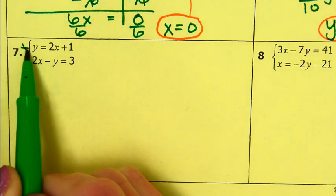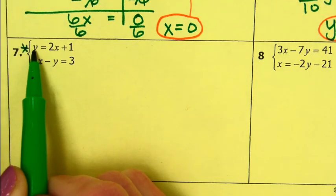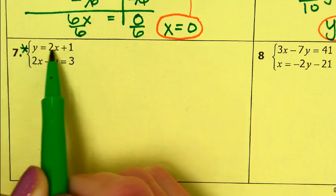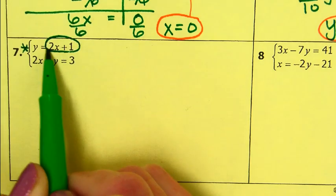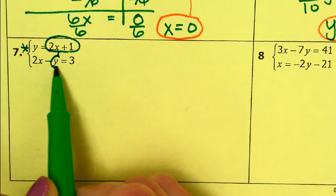So I'm going to use this equation up top because I have y by itself on one side. So I'm going to take this expression and we're going to substitute it in for this y right here.